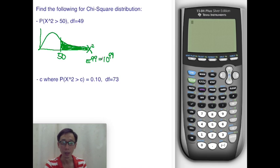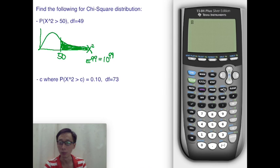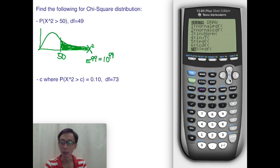Let's ask the calculator to do it. We go to Second VARS—that's the distribution button. This button will be used a lot. Scroll down past chi-square PDF.